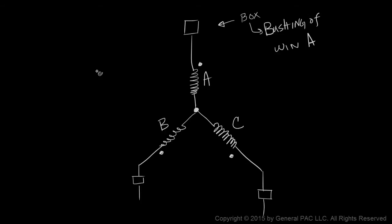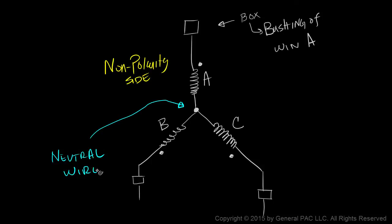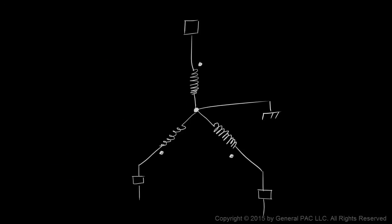The non-polarity side of all 3 windings are connected together by a neutral wire, and the neutral wire is grounded. The voltage developed across winding A is our phase A voltage, measured from the polarity side to the non-polarity side of winding A. Similarly, we have phase B voltage and phase C voltage.